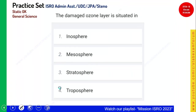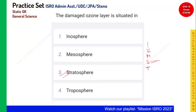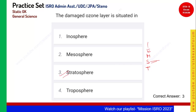The damaged ozone layer is situated in which of the following? The layers in order are: troposphere, stratosphere, mesosphere, exosphere, and ionosphere above that. The ozone layer is in the stratosphere. Option 3, stratosphere, is the correct answer.